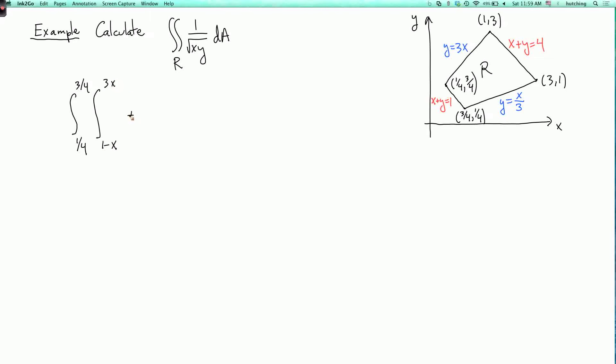And here y goes from 1 minus x to 3x. And then the next part is where x goes from 3 quarters to 1. And here y goes from x over 3 to 3x. And then the last part is where x goes from 1 to 3. And y goes from x over 3 to 4 minus x.